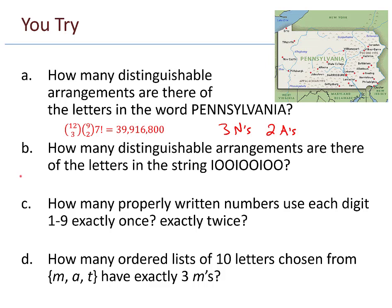Part b, how many distinguishable arrangements are there of the letters in the string? That one. There are 9 choose 3 ways to do that. Nine symbols. Three of them are i's.